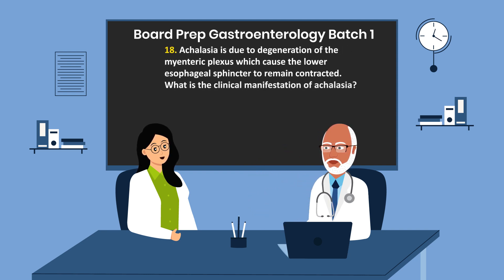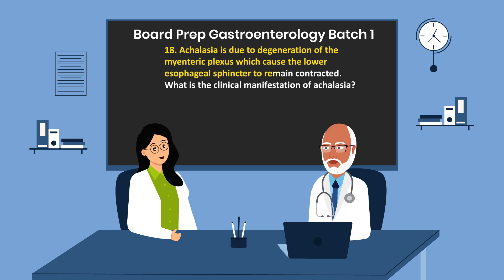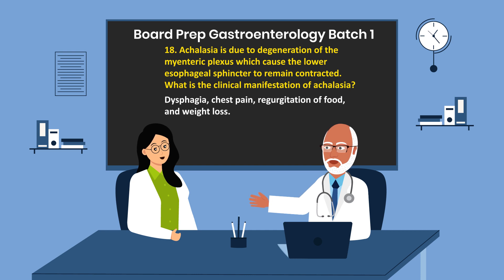Question 18. Achalasia is due to degeneration of the myenteric plexus, which causes the lower esophageal sphincter to remain contracted. What is the clinical manifestation of achalasia? Dysphagia, chest pain, regurgitation of food, and weight loss.